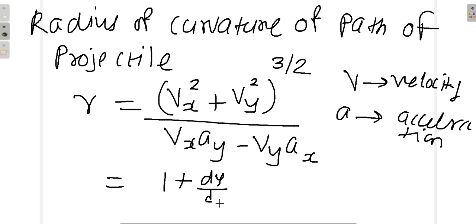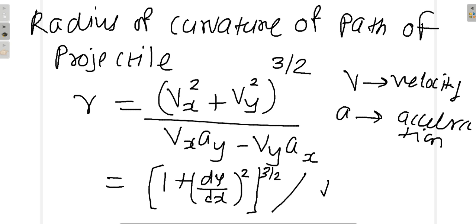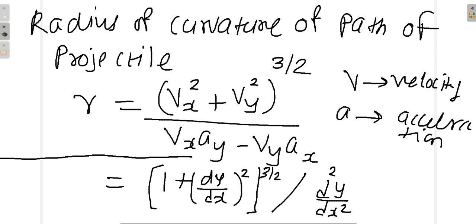Please note x and y indicate the x-axis and y-axis. The same formula is also written as (1 + (dy/dx)²) to the power 3/2, upon d²y/dx² — this considering the equation of trajectory, and the previous one considering velocities. Please do not bother about the proofs of these formulas; they are absolutely out of syllabus.